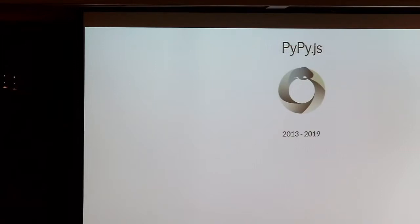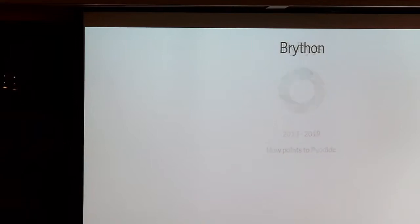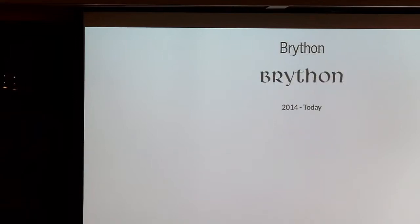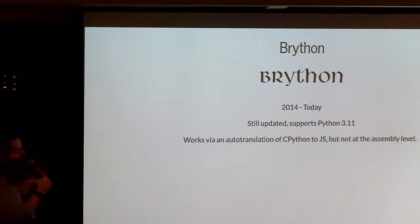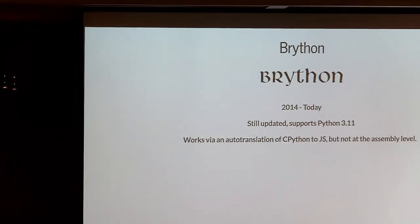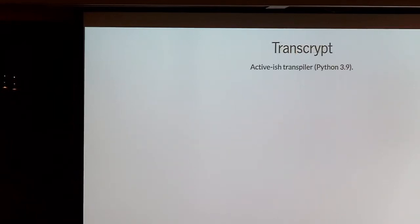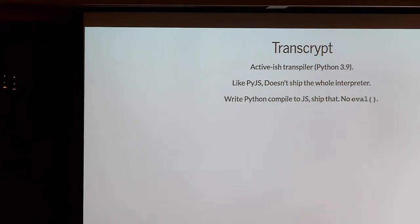PyPy.js — everything PyPy is cool. They would compile to JavaScript, as the name suggests, but it's no longer going. It points to PyIodide. There's also Brython — still going, supports Python 3.11. It works via auto-translation of CPython to JavaScript at the C-JavaScript level, not the assembly level. And there's Transcrypt — also active-ish. It's like PyJS in that it doesn't ship the whole interpreter, so you don't get eval. A lot of things won't work without eval. You get Python syntax but no ecosystem — no pip.